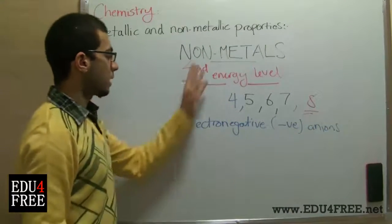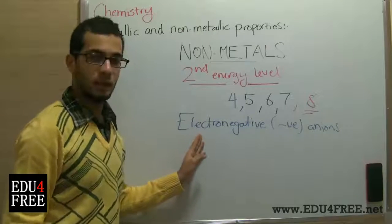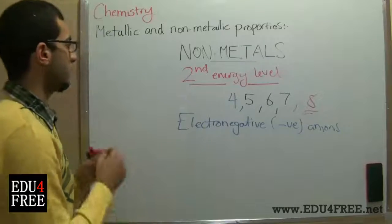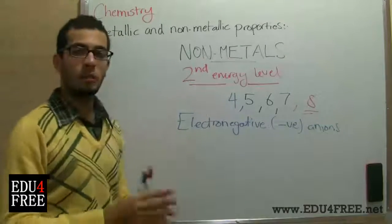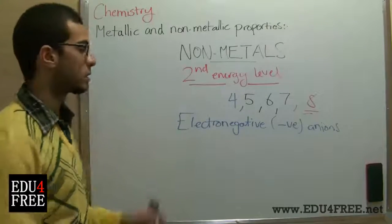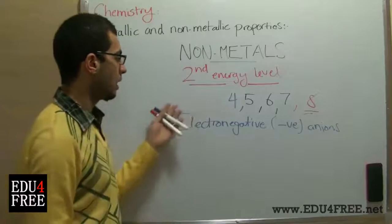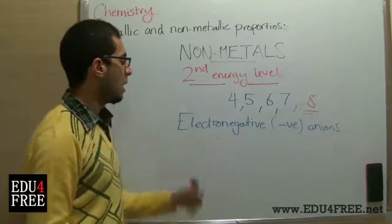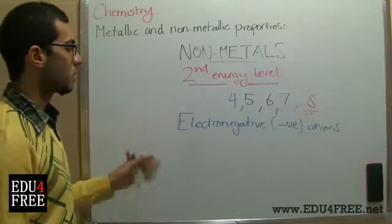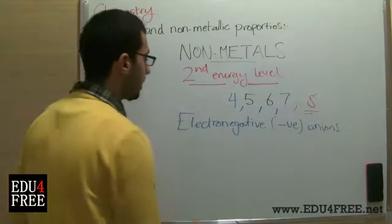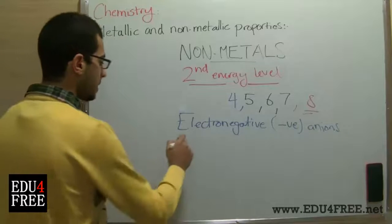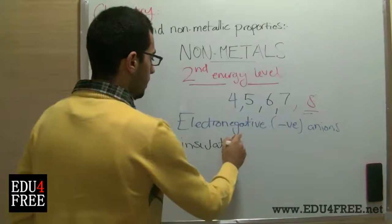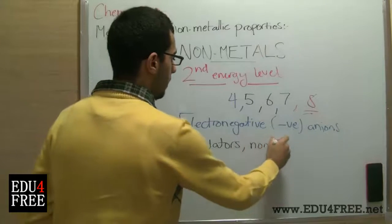As nonmetals are electronegative, this leads to the fact that nonmetals are bad conductors of electricity because they cannot lose their valency electrons. Instead, they gain electrons. So nonmetals are bad conductors of electricity — they are always insulators and non-conducting materials.